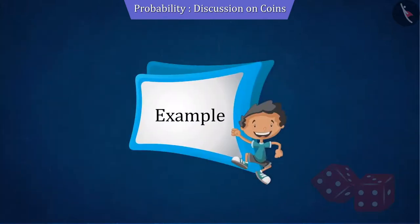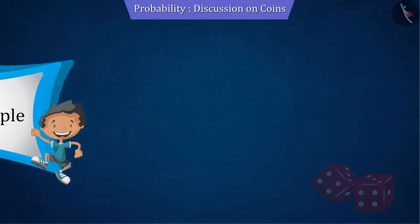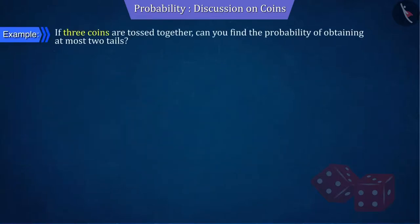Let us try to understand probability using another example. If three coins are tossed together, can you find the probability of obtaining at most two tails?